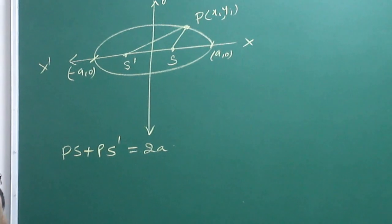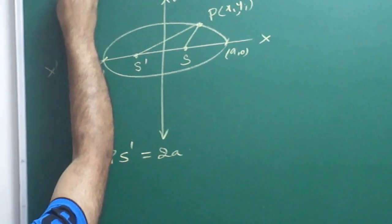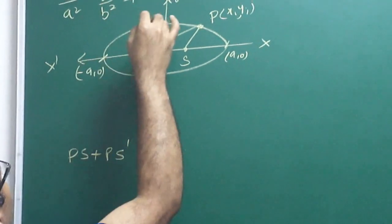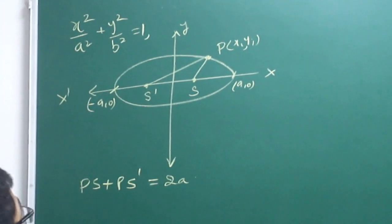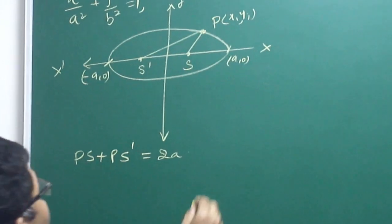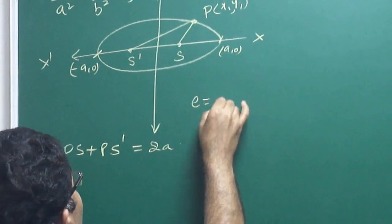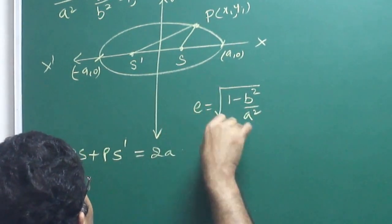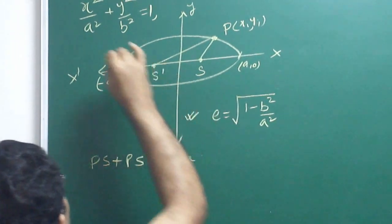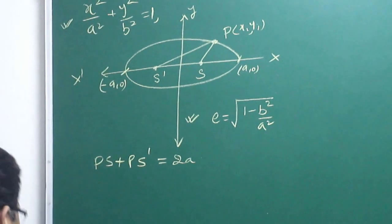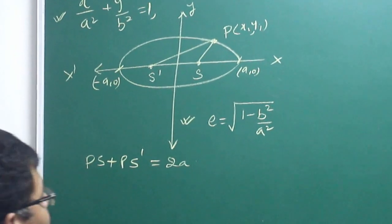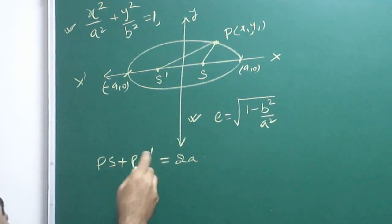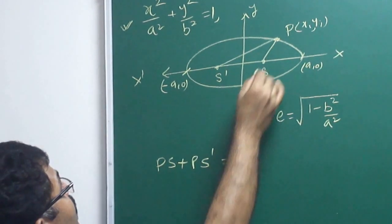Today we can prove this equation of ellipse: x squared by a squared plus y squared by b squared is equal to 1, and that e squared equals 1 minus b squared by a squared. Derivation is not required, but concept development is very important, so let us discuss how it comes.